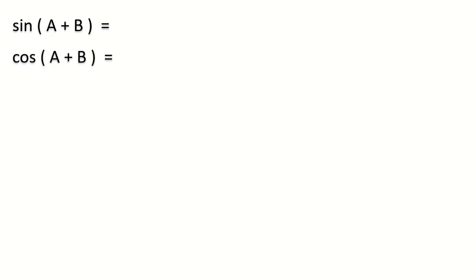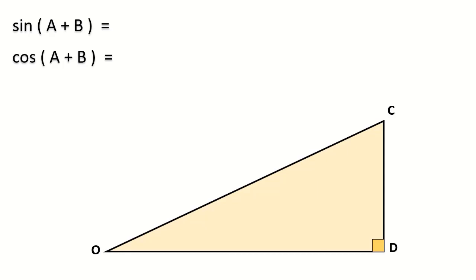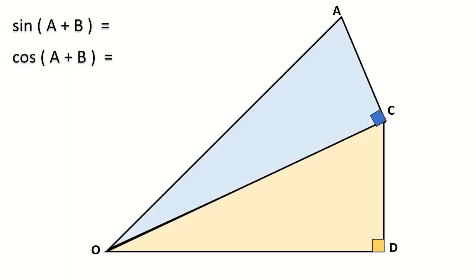We can prove this by using this diagram. Here I have a right triangle OCD, and on top of that I have another right triangle OAC. The first triangle has an angle A, the second triangle has an angle B, and the second triangle also has a hypotenuse of 1.